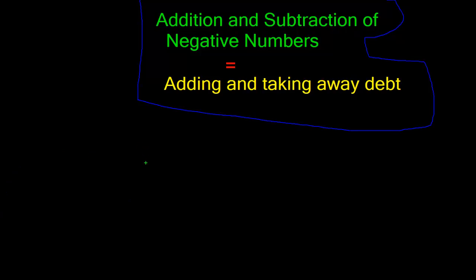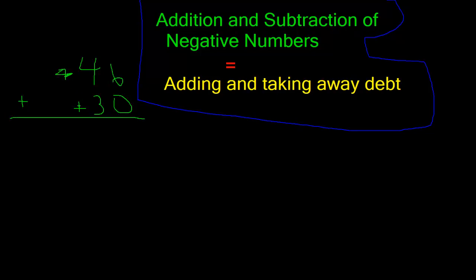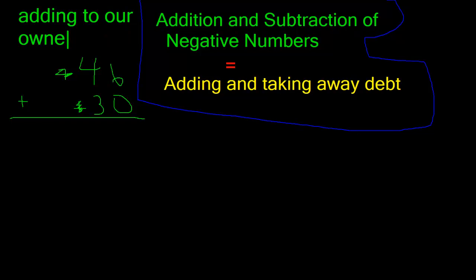Let's look at what we're doing when we add positive numbers. Let's say we have 46 and 30. When we just write 46 and 30, we're really writing positive 46 and positive 30. We can omit writing positive in front of each number when they're in positive form. We already own 46, so we're just adding 30 to how much we own.